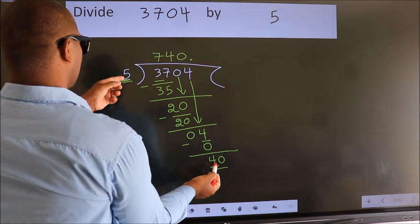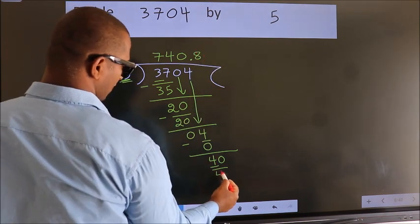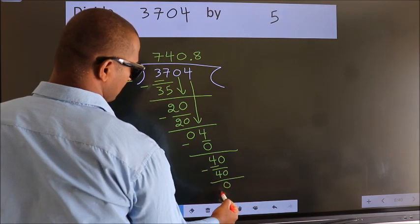When do we get 40 in the 5 table? 5 times 8 is 40. Now we subtract. We get 0.